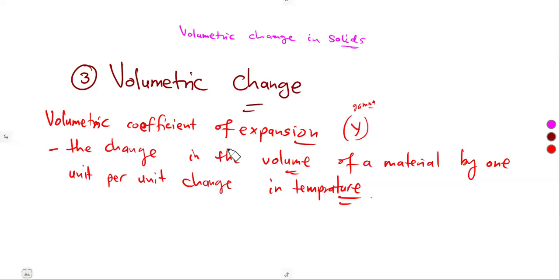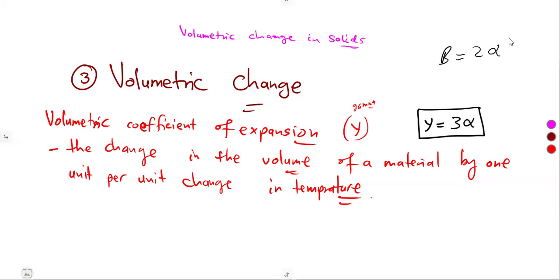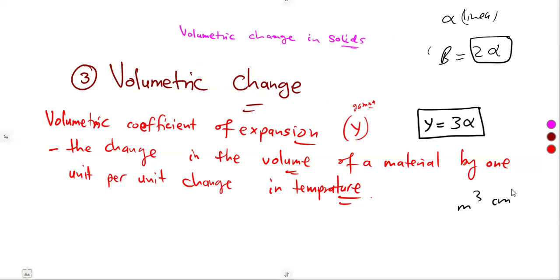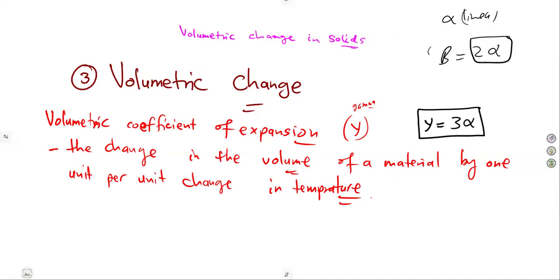The volumetric coefficient of expansion, gamma, is equal to three times alpha. Just like what we had on area — beta was equal to two alpha — where alpha is our linear coefficient. So it's linear, area, volume. When dealing with volume, we are dealing with cubic units: cubic centimeters, cubic meters, liters. When you consider capacity and volume, you know that you are dealing with volume.